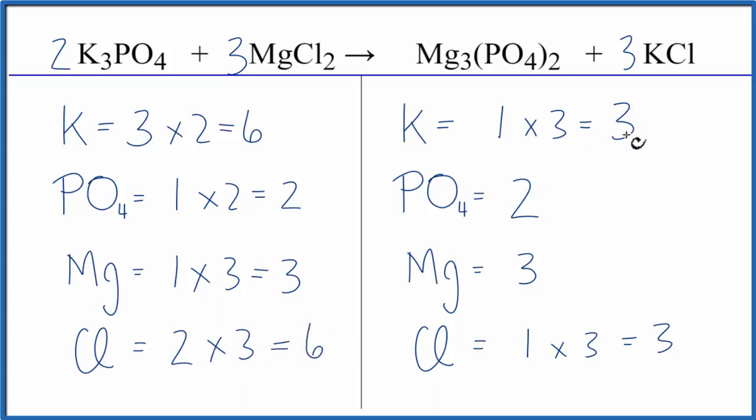At this point we can see we have three potassiums here, six here, three chlorines, six chlorines. So we're going to need to change the coefficient here. So to get the six potassiums and the six chlorines, we'll put a coefficient of six.